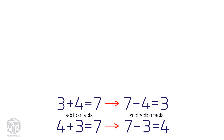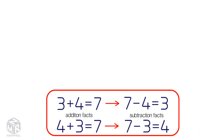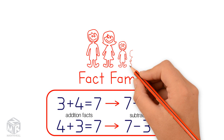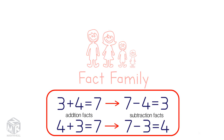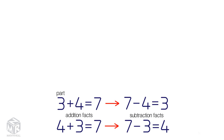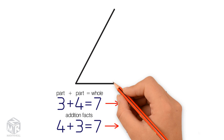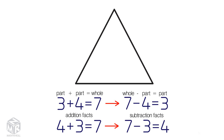For each set of three different numbers, you can create two addition and two subtraction number facts that are related. We call these four number facts a fact family, since they're related kind of like members of a family. In addition facts, we add a part plus a part to make a whole. In subtraction facts, we subtract a part from a whole to make a part. The fact family shows the relationships between the three numbers involved. We can use fact family triangles to help us understand these relationships.